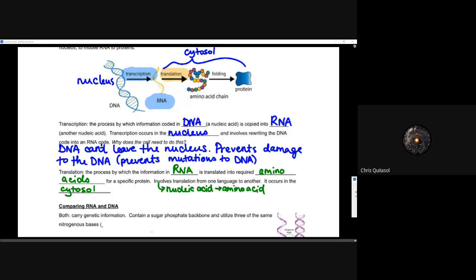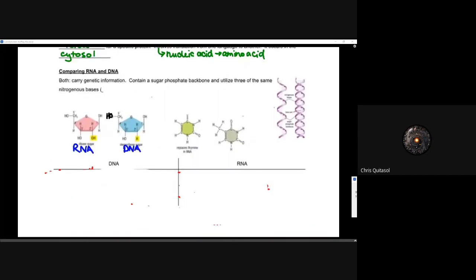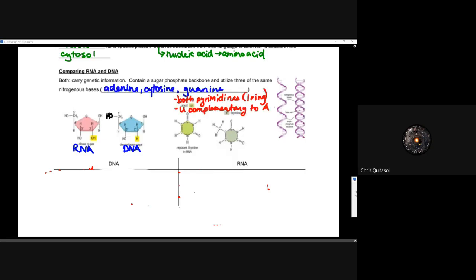In order to properly understand how that works, we need to compare RNA and DNA to each other. Both carry genetic information and both contain a sugar-phosphate backbone and utilize three of the same nitrogenous bases: adenine, cytosine, and guanine. Uracil is complementary to adenine — it replaces thymine. It's still a pyrimidine with similar structure, but it changes a little bit.